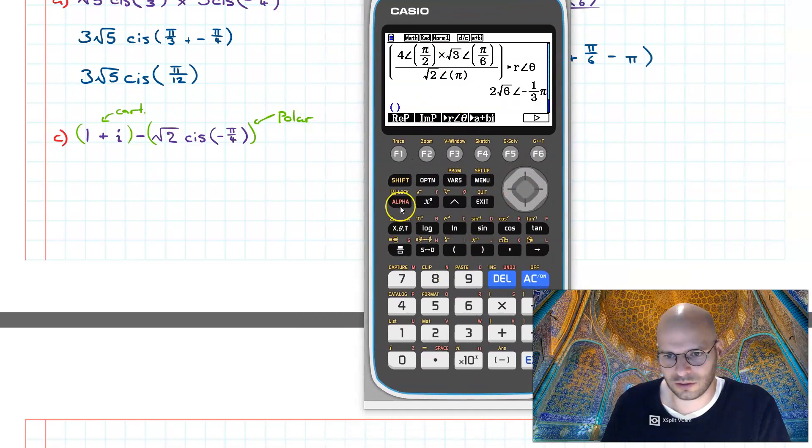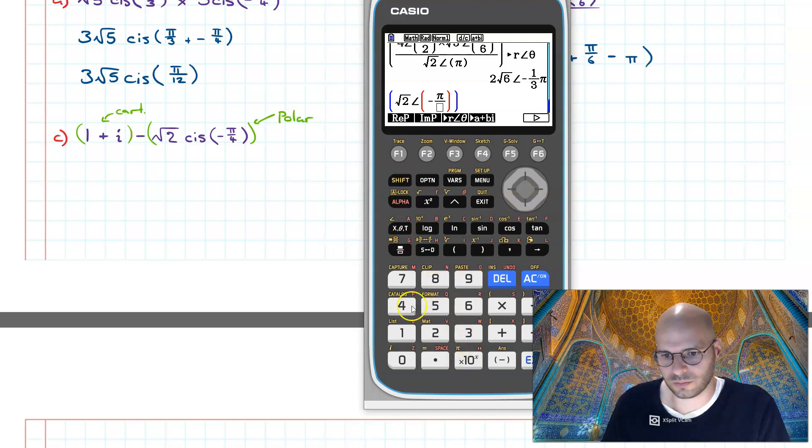To start off with, I'm simply going to go in brackets root 2, my angle of negative pi on 4, and then I'm going to ask it to output this as rectangular form.